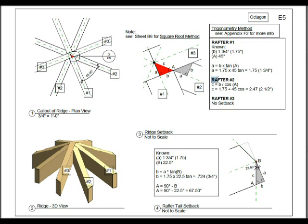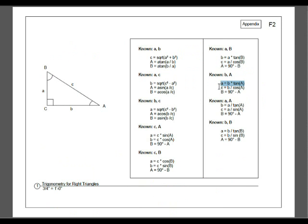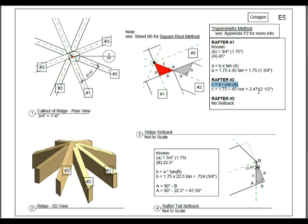After number 2, we want to solve for C. Using our trigonometry table, C equals B divided by the cosine of angle A. The result is 2 and a half inches. So that's the setback for rafter 2.